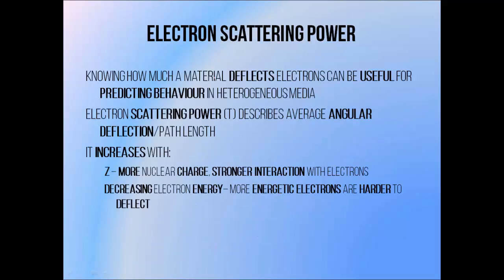The various stopping powers describe the rate of energy lost by electron beams as they pass through things, but it can also be very useful to know how much electrons are scattered as they pass through things, especially for understanding how electron beams move through heterogeneous media like the human body. The electron scattering power, denoted by the letter T, tells us the average angular deflection in degrees experienced by an electron beam as it passes through something. As electron beams enter a patient they tend to be moving in fairly straight lines, but as they travel deeper and deeper they tend to be deflected more and more on average from their original path. The electron scattering power tells us how rapidly this happens with depth. It increases as the material atomic number increases, because there is more nuclear charge and electrons tend to interact with it more strongly, undergoing more elastic scattering interactions which are primarily responsible for these angular deflections. It also increases as electron energy decreases.